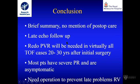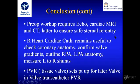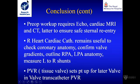In conclusion: redo PVR will be needed in virtually all Tetralogy cases 20 to 30 years after initial surgery. Most patients have severe pulmonary regurgitation and are asymptomatic, and they need operation to prevent late right ventricular problems. These days survival after Tetralogy of Fallot repair approaches normal life expectancy. Pre-op workup requires echo, cardiac MRI, and CT — the latter essential to ensure safe sternal re-entry. Right heart catheterisation remains useful to check coronary anatomy, confirm valve gradients, outline the RPA and LPA, and measure left-to-right shunts. Pulmonary valve replacement sets the patient up for a later valve-in-valve transcatheter procedure.